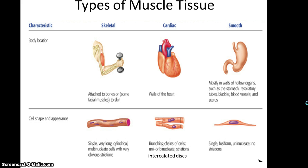Then there's cardiac muscle tissue. It's found in the walls of the heart. It is often chains of branching cells with one or two nucleuses, and it also possesses the striations.